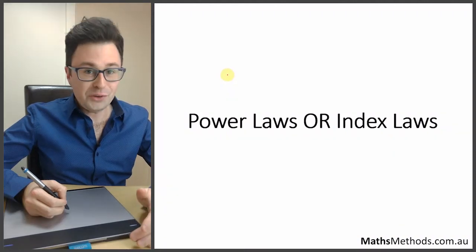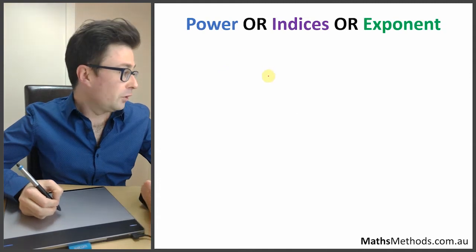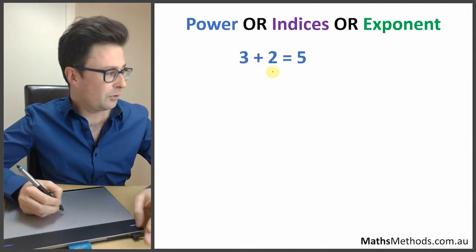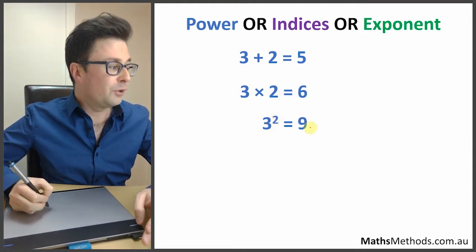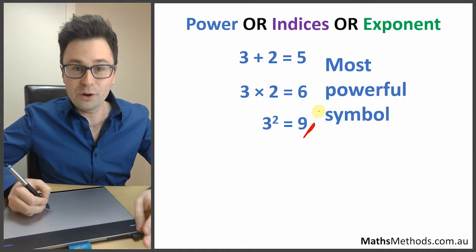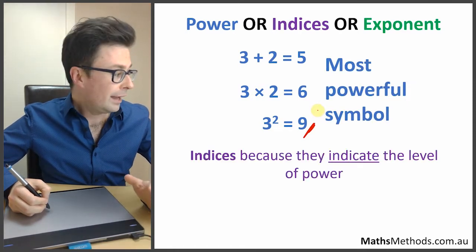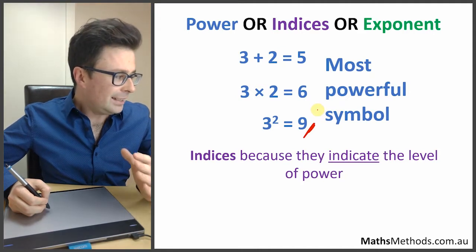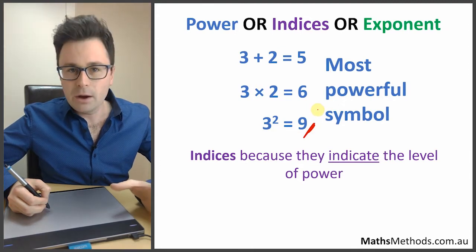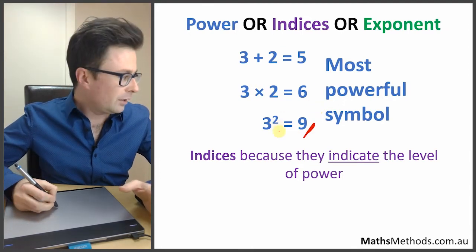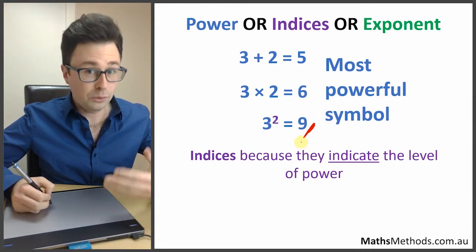We're going to cover power laws, indices, or exponents, which are pretty much all the same thing. A power is called a power because you've got 3 plus 2, 3 times 2, or 3 to the power of 2 — the power gives you the most powerful result, so it's the most powerful symbol. It's also called an index, and indices means it indicates the level of power. This 2 indicates that the 3 is multiplied by itself twice, so it's called an index.